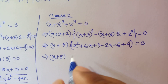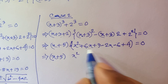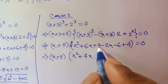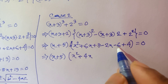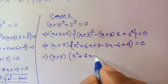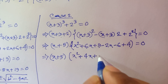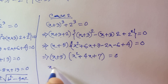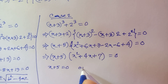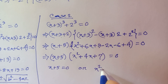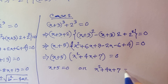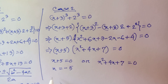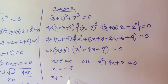This gives x plus 5 times x squared plus 4x plus 7 is equal to 0. We have two solutions: x plus 5 equals 0, which gives x equals minus 5. So x₄ equals minus 5.